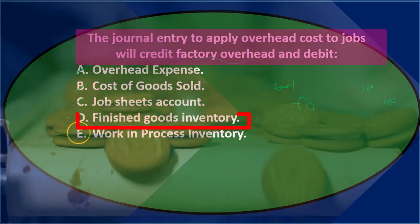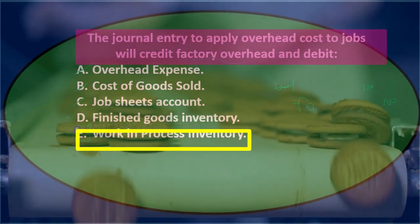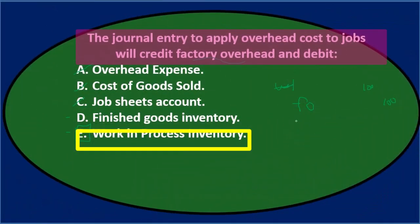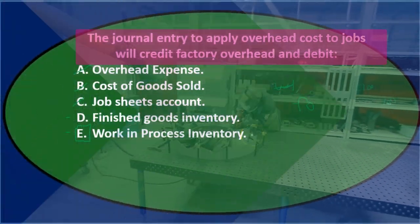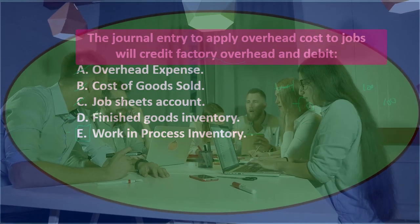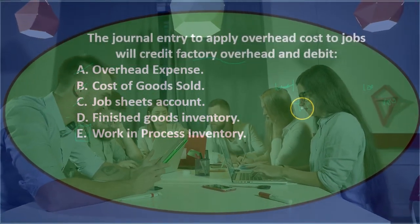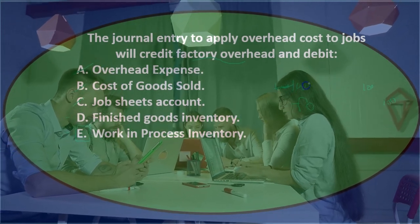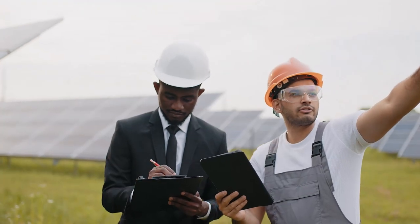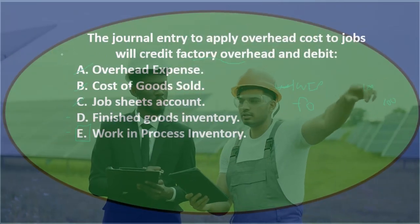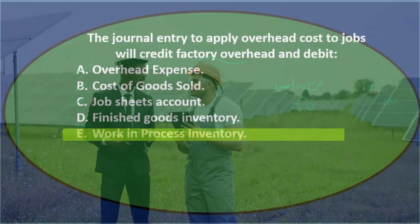Is it going into finished goods or work in process? If you think about the normal process, it would first go to work in process and then to finished goods. Factory overhead is put there because we don't know which job to assign it to — we can't put it in work in process at the time incurred. Then we figure out which job it goes to based on an estimate and take it out of factory overhead into work in process. Final answer: the journal entry to apply overhead costs to jobs will credit factory overhead and debit E, work in process inventory.